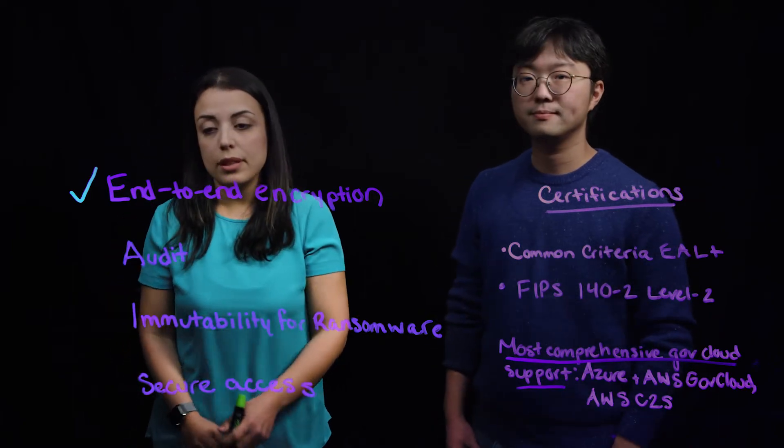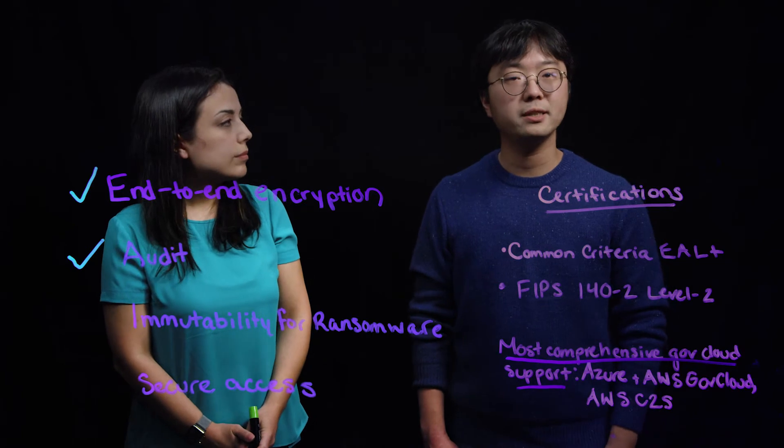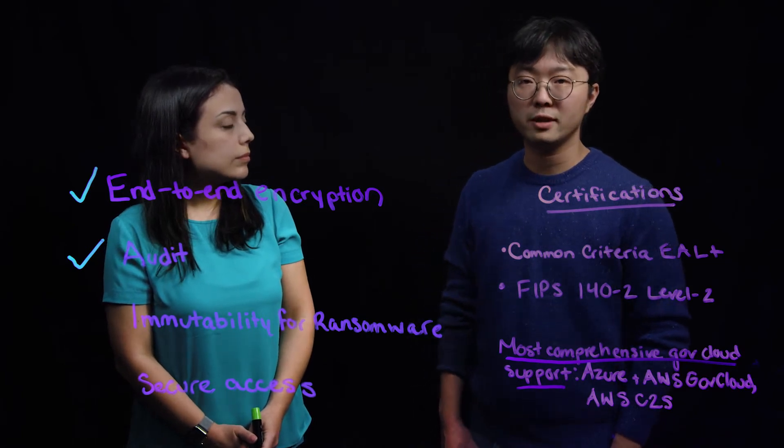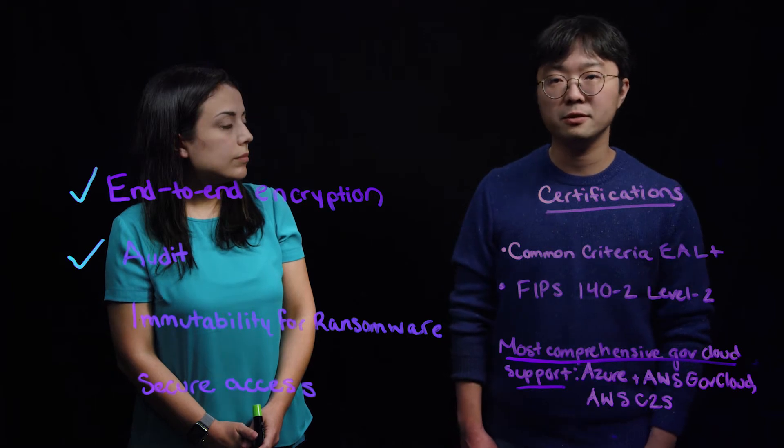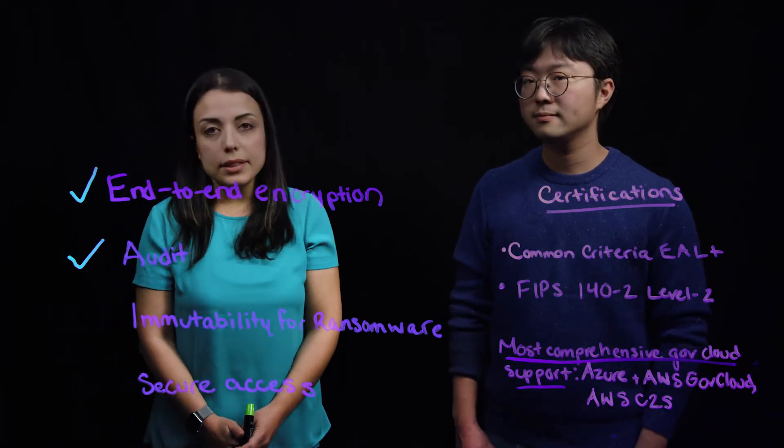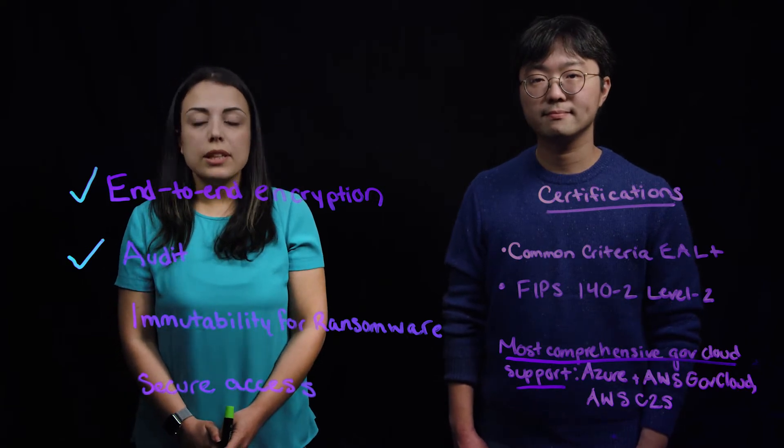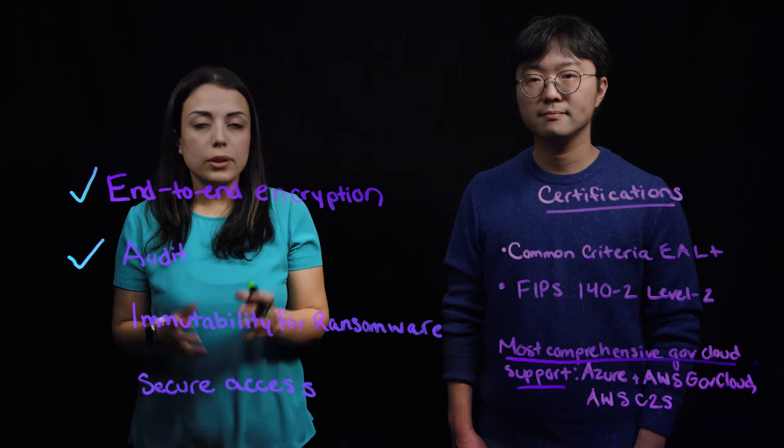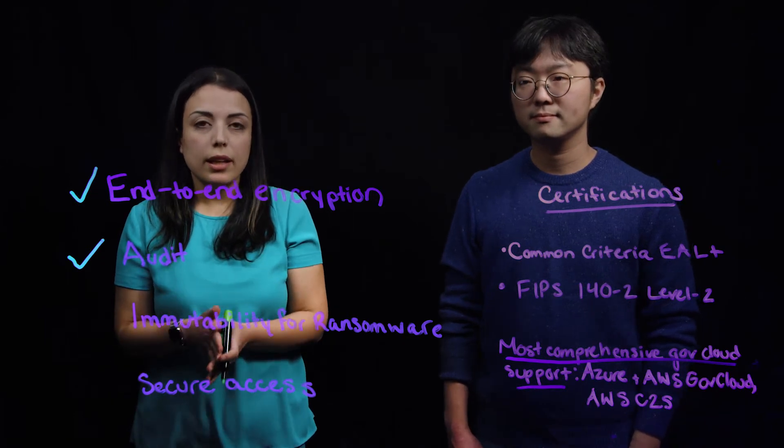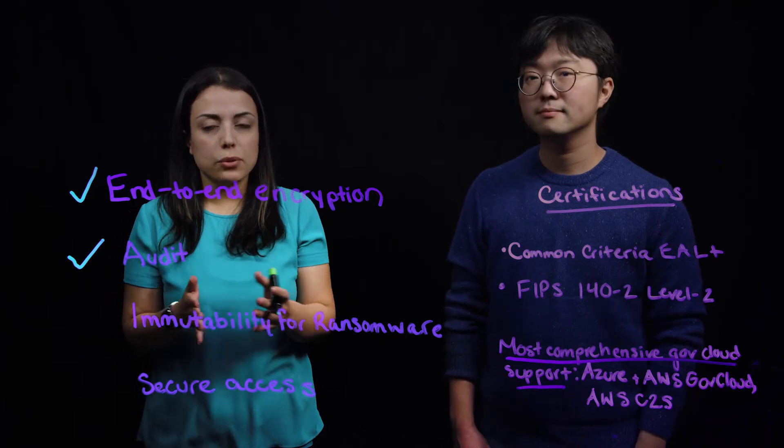The second principle is audit capabilities. Rubrik maintains comprehensive audit logs of all user activities and cluster events, and they are easily viewable through our UI. Audit capabilities help enterprises ensure compliance. With instant access to all their data, enterprises can easily locate a specific version of a file and also make sure that it's there, whether it's on-premise or in the cloud.